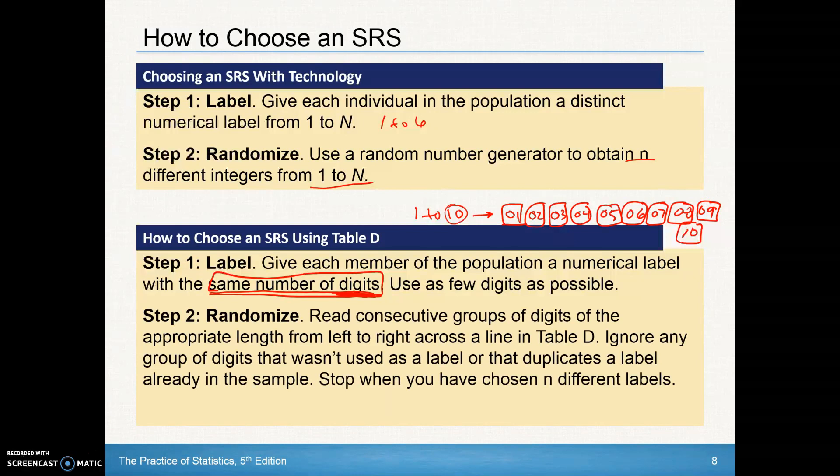And then again, want to be able to randomize. So what we're going to do is read consecutive groups of digits of the appropriate length from left to right across a line in table D. You're going to ignore any groups of digits that weren't used as a label or that are duplicates. And then stop when you have chosen the different values you need.